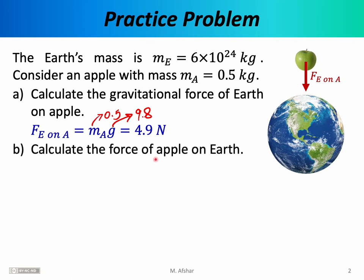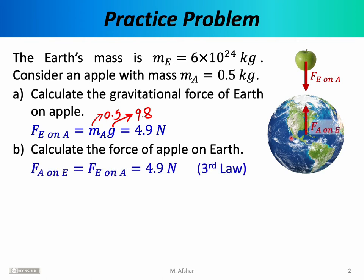Part B says: calculate the force of apple on Earth. At first this might seem strange, but we know from Newton's third law of motion that for every action there's an equal but opposite reaction. So if the Earth is pulling on the apple, the apple must be pulling on Earth with exactly the same force — 4.9 newtons — but in the opposite direction, pointing upwards, in the positive y direction.